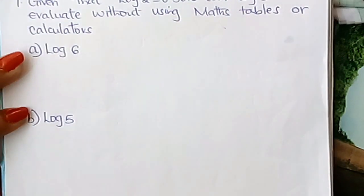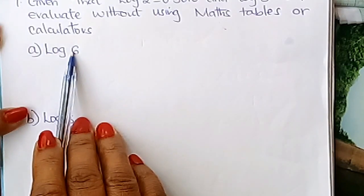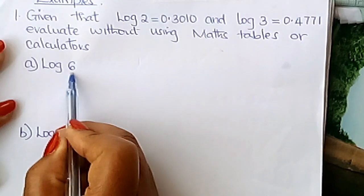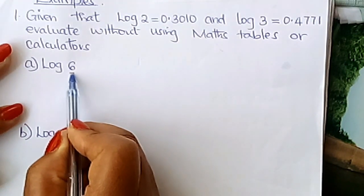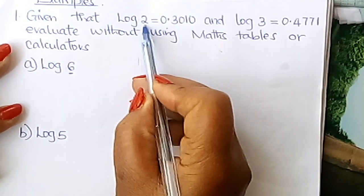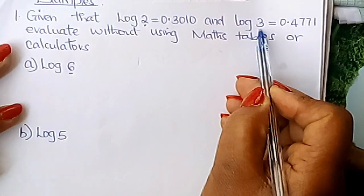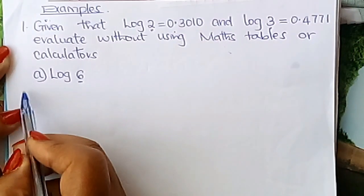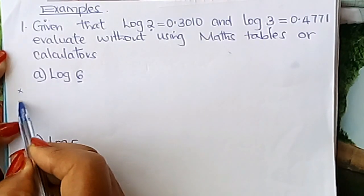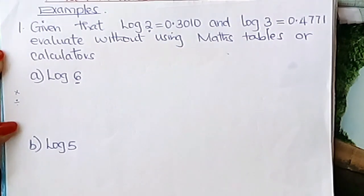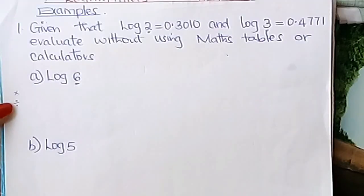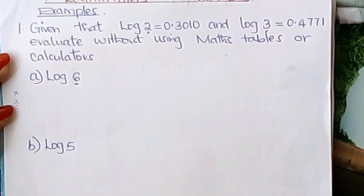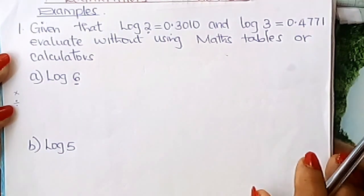How do we evaluate log 6 without maths tables or calculators learner? What you do is that you look at the 6 here and you express this number here in terms of 2 and 3. Express 6 in terms of 2 and 3. And you either multiply 2 and 3 or divide. This leads us to laws of logarithms.